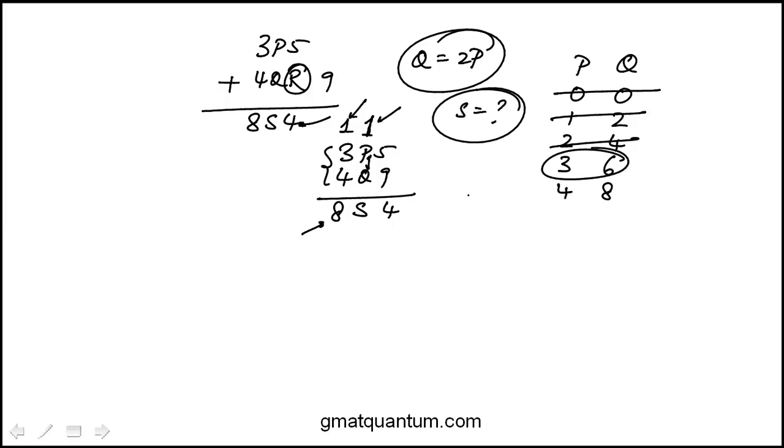This would work because if it's 3, 3, 5, and 4, 6, 9, that's 10. And then you would get a carryover. But in this case, s would be 0, which is a possible value, but it's not in the answer choice. So we are really just left with that one.